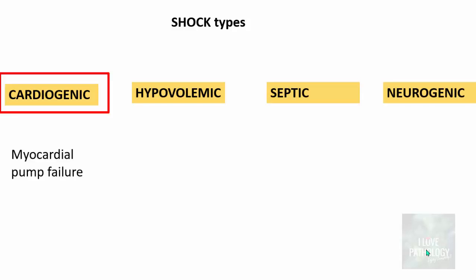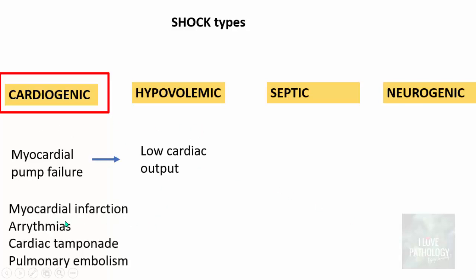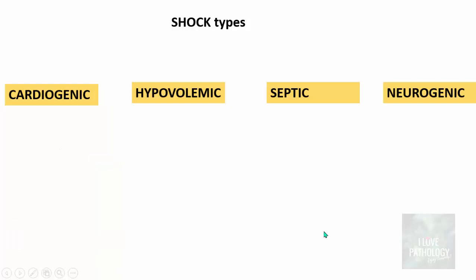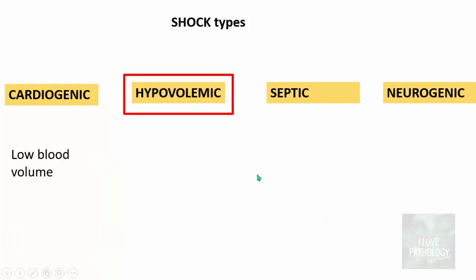Let us understand cardiogenic shock. It is basically a myocardial pump failure which leads to low cardiac output. The various causes for cardiogenic shock include myocardial infarction, various arrhythmias, cardiac tamponade, and even pulmonary embolism can result in cardiogenic shock.